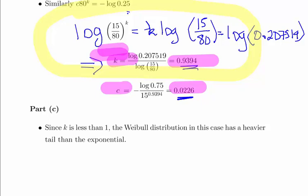Now the third part asks us about the relationship or the comparison between the Weibull distribution and the exponential distribution. So in this case, K is less than or equal to 1. And that means that the Weibull distribution in this case has a heavier tail compared to the exponential distribution. So essentially, the question there really is the role of K when you want to compare it to the exponential distribution. The exponential distribution is almost like a baseline case of the Weibull distribution where K is equal to 1.